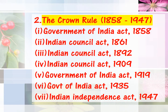The Crown Rule from 1858 to 1947 and its sub-acts will be discussed in the upcoming video. In the Crown Rule, the acts are: Government of India Act 1858, Indian Council Act 1861, Indian Council Act 1892, Indian Council Act 1909, Government of India Act 1919, and Government of India Act 1935.